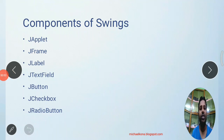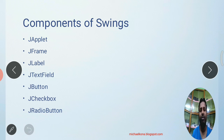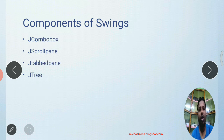Let us discuss about components of Swing. There are so many components; out of those, if you study some of them, the remaining things are very easy to understand. The components are: JApplet, JFrame, JLabel, TextField, Button, Checkbox, RadioButton, ComboBox, ScrollPane, TabbedPane, JTree. These are the basic components. If you know these, remaining things we can understand on our own.